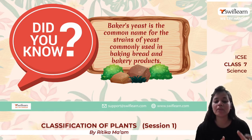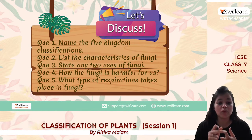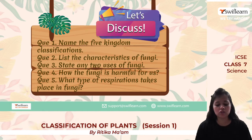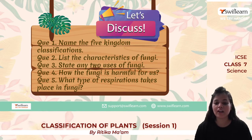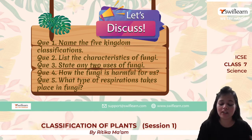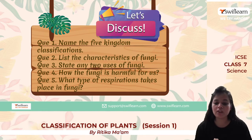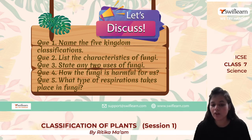Baker's yeast is the common name for strains of yeast used in bakery products like breads and cakes. In review: the five kingdoms are Monera, Protista, Fungi, Animalia, and Plantae. Characteristics of fungi: eukaryotic, non-vascular, unicellular or filamentous, small nucleus, reproduce using spores. Two uses of fungi: used in medicine and in recycling, also as food (e.g., mushrooms) and as biological control agents. Harmful effects: black rust in plants, ringworm in animals, food spoilage causing economic losses. Fungi undergo anaerobic respiration.